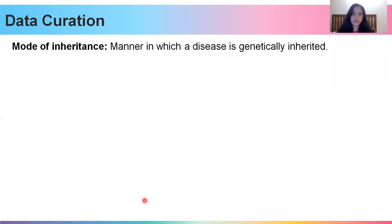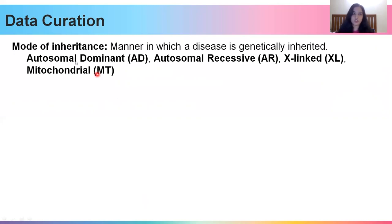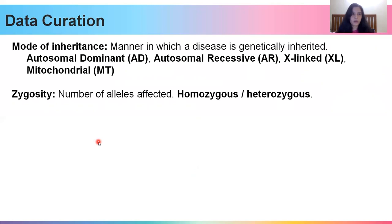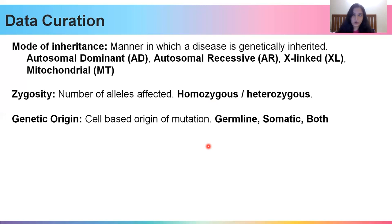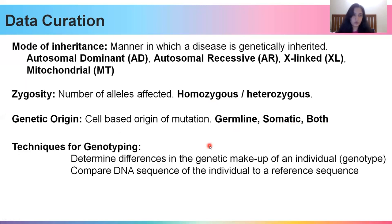Next is the mode of inheritance — the manner in which the disease is genetically inherited. Typical modes encountered in papers include autosomal dominant (just one damaged allele is enough to cause disease), autosomal recessive (both copies must be mutated), X-linked, and mitochondrial. Then zygosity — whether it is a homozygous or heterozygous mutation. The genetic origin of the mutation refers to which cell the mutation arose from: a germline mutation (occurring in sperm and ovum), a somatic mutation (in somatic cells), or both.